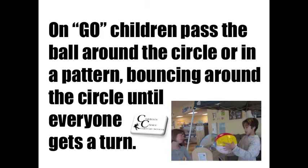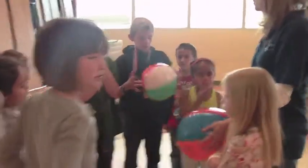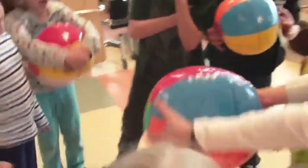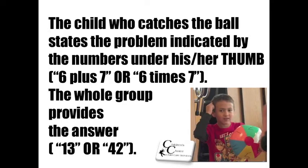On go, pass the ball around the circle or in a pattern, bouncing the ball until everyone gets a turn. When you throw it up and catch it, look under your thumbs — there are two numbers. Depending on the age, the child who catches the ball states the problem indicated by the numbers under his or her thumb, like six plus seven or six times seven. Then the whole group provides the answer.